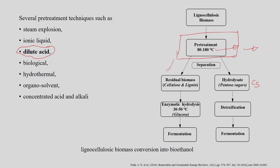The residual biomass — mainly cellulose with some lignin and residual hemicellulose — is enzymatically hydrolyzed to produce C6 sugar (glucose). The C6 sugars and C5 sugars are fermented separately to produce aqueous ethanol, which is then converted into commercial-grade ethanol by distillation. The number of steps required for lignocellulosic biomass conversion to ethanol is comparatively more than for starch and sucrose.